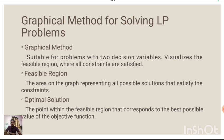Graphical methods for solving LP problems. First, graphical methods are suitable for problems with two decision variables. Second, the feasible region is where all the constraints are satisfied. The area on the graph represents all possible solutions that satisfy the constraints. Third, the optimal solution is the point within the feasible region that corresponds to the best possible value of the objective function.